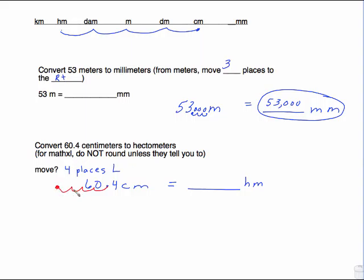That's where the decimal's going to go. In each of these little waves, we're going to have to add zeros. So this is .00604 hectometers. And do not round this off unless Math Excel tells you. If they had said, round to the thousandth place, this would be .006. But they didn't say round, so you use every digit that you have.